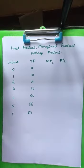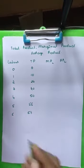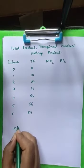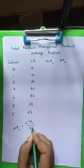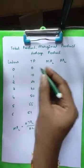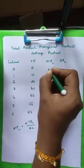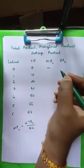Now we have to find out the marginal product and average product. The formula to find the marginal product is: change in output divided by change in input, that is, Marginal Product of Labour = ΔTPl divided by ΔL. When there is 0 labour and 0 output, the marginal product is going to be 0.